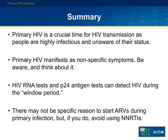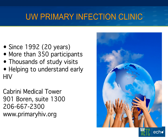In summary: primary infection is a crucial time. It's important to recognize because people are really infectious and primary infection accounts for a large minority of overall transmission. The symptoms are nonspecific and you have to know what tests to order — think about HIV testing when someone comes in with a viral syndrome if you're seeing HIV-negative folks. It's gotten easier with tests that can detect acute HIV without ordering a specific test, but you still have to think about it. If starting antiretrovirals during primary infection, please do so — but avoid NNRTIs until resistance testing is back. We've had a primary infection clinic since 1992, enrolled over 300 people, and we're available as a resource to patients and providers. Please feel free to contact us. Thank you.